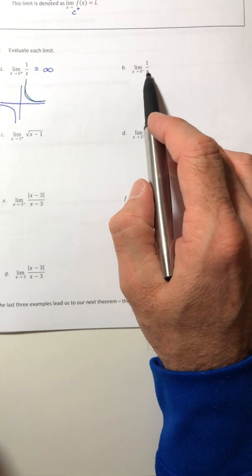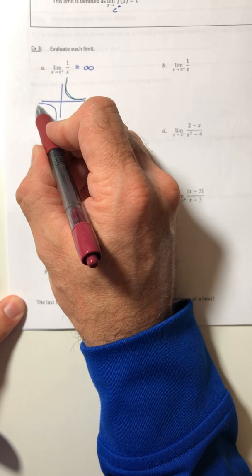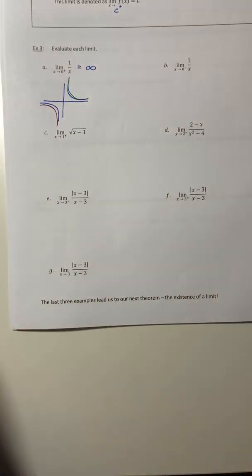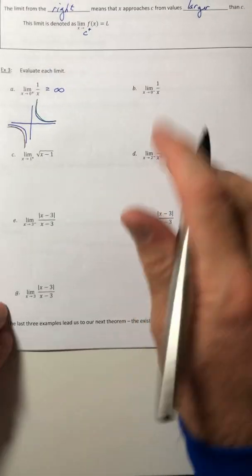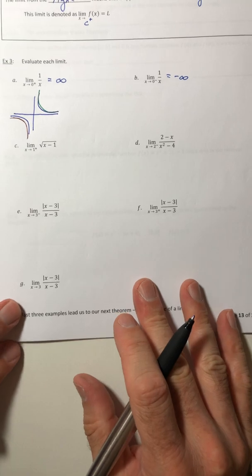Okay, part B, same function, but now you're coming in from the left. So that's shooting down towards negative infinity. It's negative infinity.